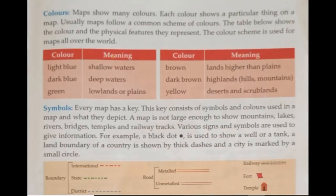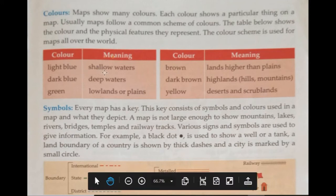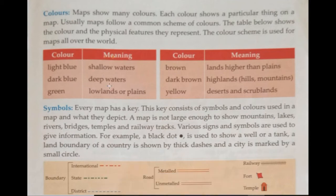Colors. Maps show many colors, and each color shows a particular thing on a map. Maps follow a common scheme of colors the world over: light blue shows shallow waters, dark blue shows deep waters, green shows low lands or plains, brown shows higher lands than plains, dark brown shows high lands, hills and mountains, and yellow shows deserts and scrub lands.